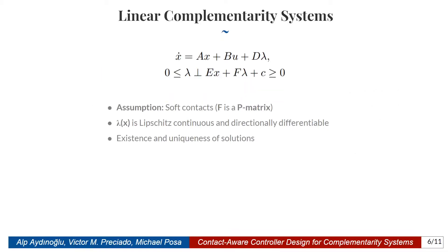After doing this non-smooth approximation, what we have is a linear complementarity system. Here, we assume that F is a P matrix, which is equivalent to saying that our contacts are soft contact models. This gives us two nice properties. The first one is that the contact force lambda is Lipschitz continuous function of x, and it is directionally differentiable. The second thing it gives us is the existence and uniqueness of the solutions, given any initial condition.